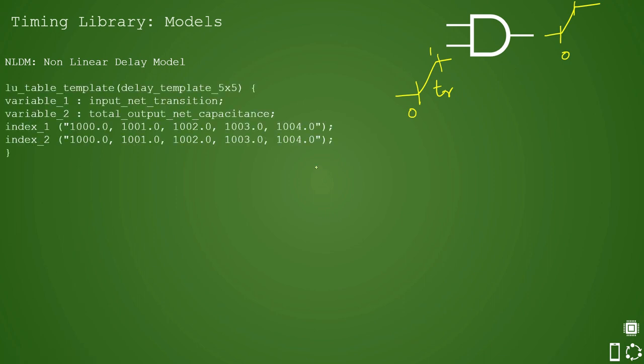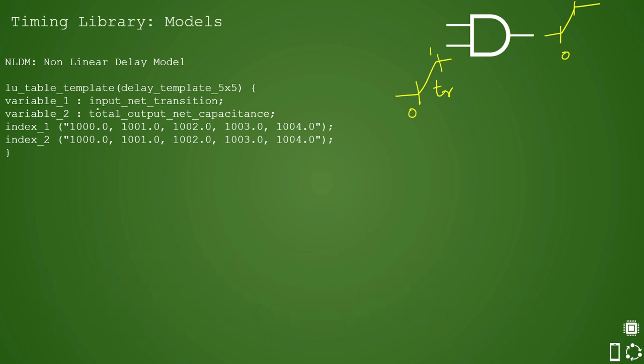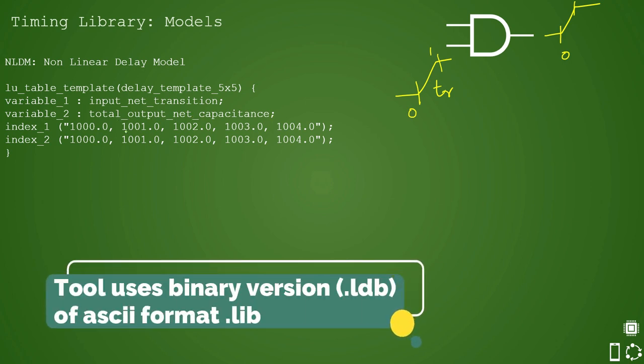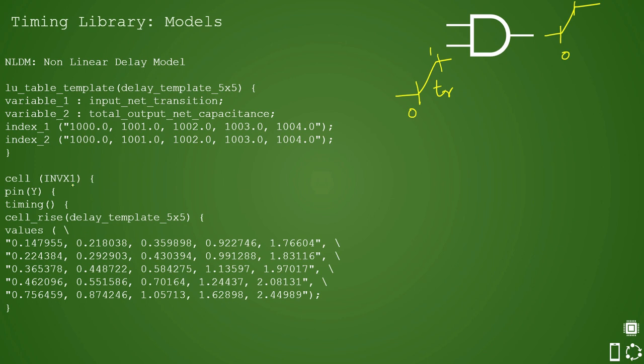Here is a template to understand the library contents with NLDM model implemented. This is a lookup table in which you can see that first variable is input net transition and second variable is output net capacitance and there are two indices mentioned. So there are values mentioned in the indexes and now let's say we have a cell, let's say there is one cell INVX1 so it is an inverter and its pin is Y, let's assume this pin is input pin.